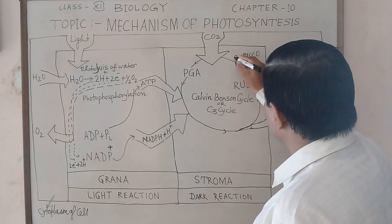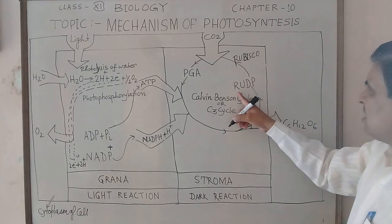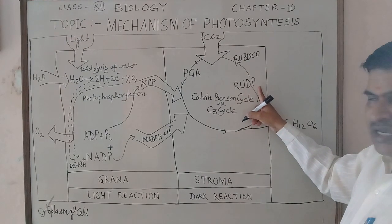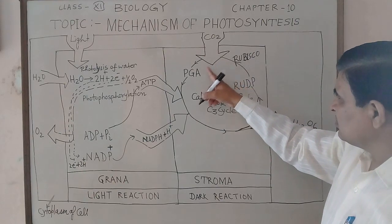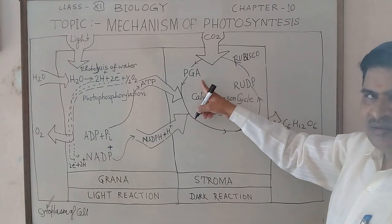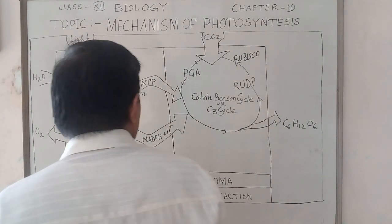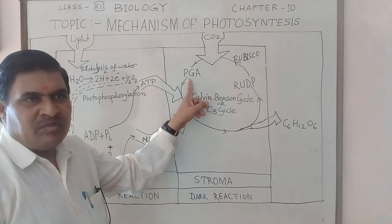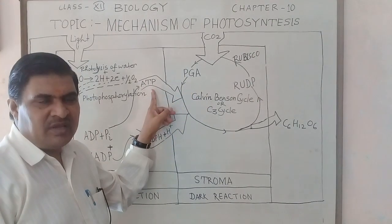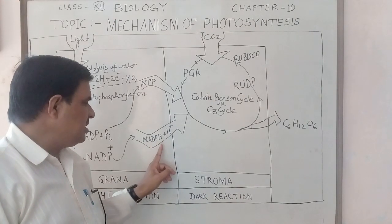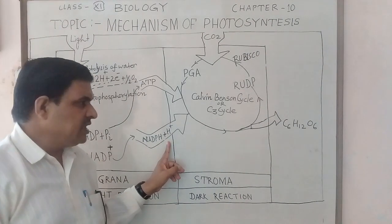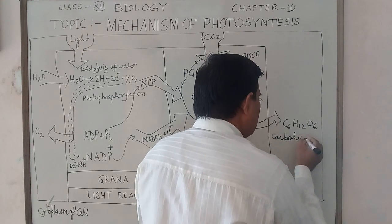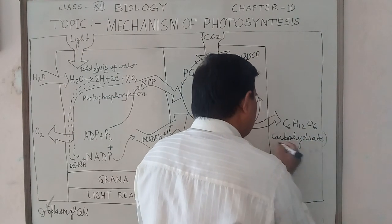In the presence of Rubisco enzyme, the compound RUBP (ribulose-1,5-bisphosphate) changes into the 3-carbon compound phosphoglyceric acid (PGA), producing 12 molecules. These phosphoglyceric acid molecules, by the use of ATP and NADPH+H+, lead to the synthesis of carbohydrate in the form of glucose, which is a 6-carbon molecule.